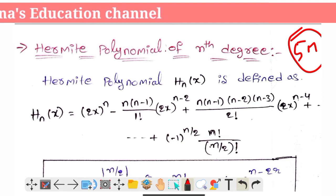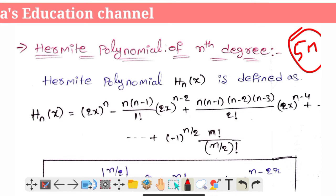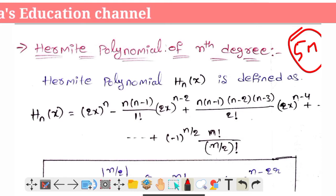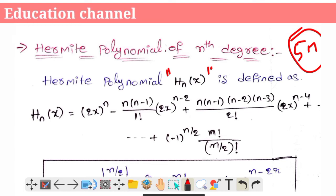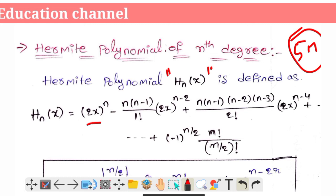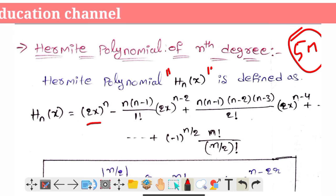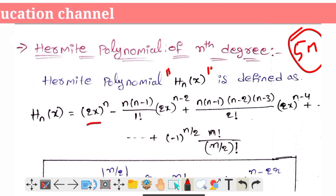Define the nth degree Hermite polynomial. It's done in the exam for the definition. The Hermite polynomial H_n(x) is defined as: H_n(x) = 2x to the power n, minus n(n−1)/1! times (2x)^(n−2), plus n(n−1)(n−2)(n−3)/2! times (2x)^(n−4), plus and so on, up to (−1)^(n/2) times n divided by (n/2 − 1) factorial.